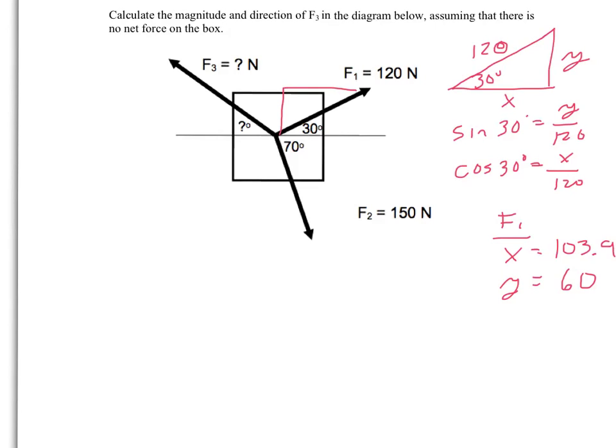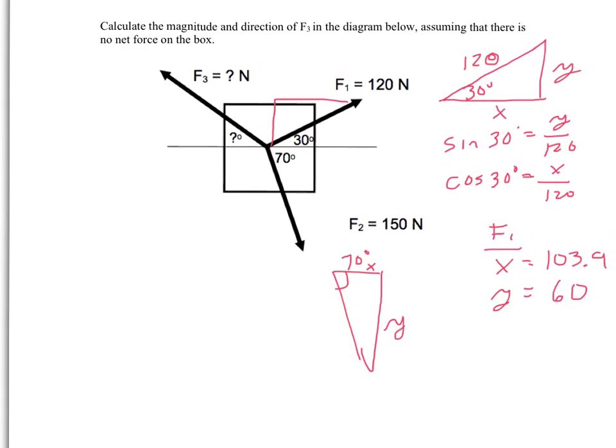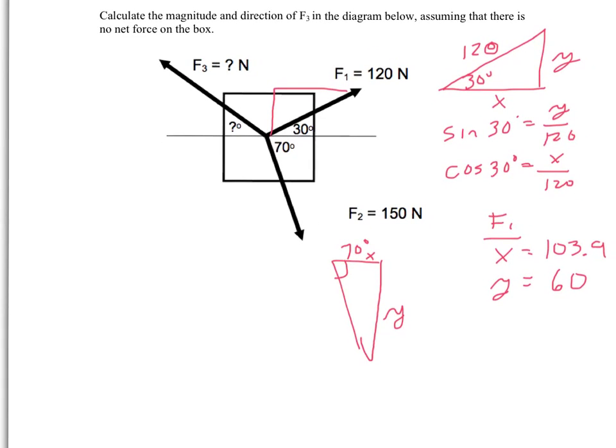So now I'm on to F2. So I'm going to draw that. So this is 70 degrees here. And this is my y. And this is my x. So sine of 70 degrees equals my opposite, again, in this case happens to be y, over, this force is 150, so that's hypotenuse over 150. And the cosine of 70 degrees is the x over 150 in this situation.